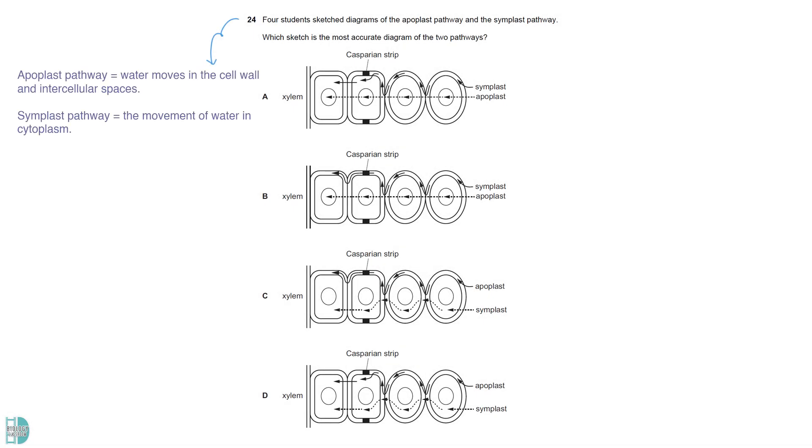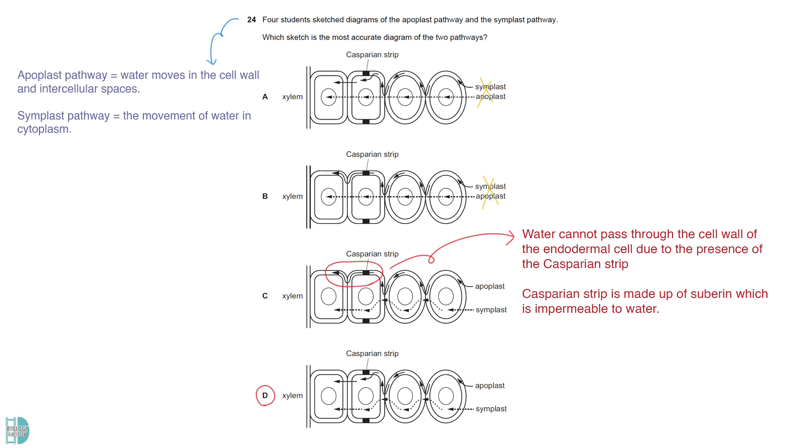Water moves in the cell wall and intercellular spaces in the apoplast pathway, while the symplast pathway refers to the movement of water in the cytoplasm. A and B label the names incorrectly. C has the correct labels, but water cannot pass through the cell wall of the endodermal cell due to the presence of the Casparian strip, which is made out of suberin. It is impermeable to water.